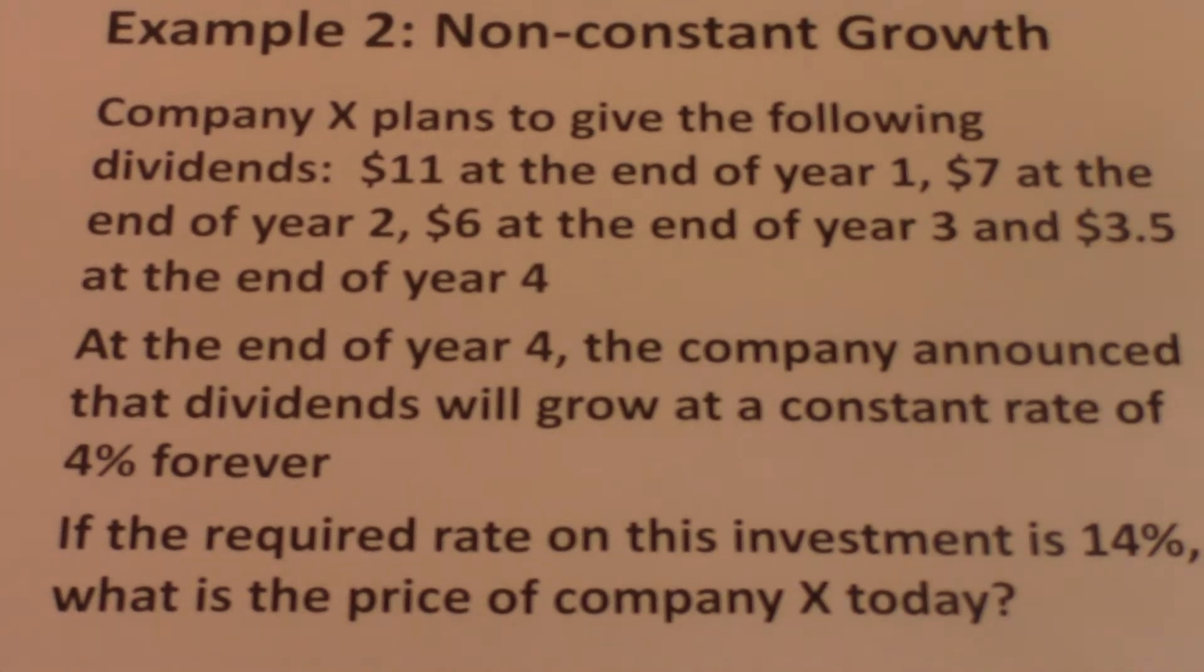Company X plans to give the following dividends: $11 at the end of year 1, $7 at the end of year 2, $6 at the end of year 3, and $3.5 at the end of year 4.